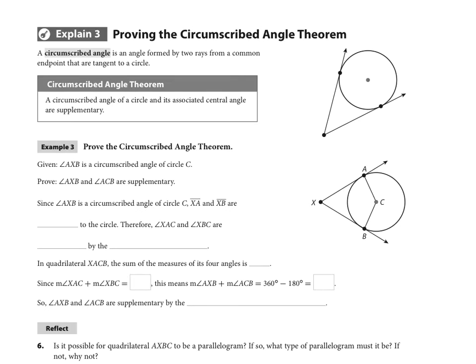What we're being asked to do is to prove that angle AXB and angle ACB are supplementary, because that's what our theorem says: a circumscribed angle of a circle and its associated central angle are supplementary.